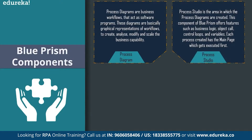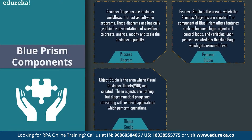Moving on to the next component — process studio. Process Studio is the area in which process diagrams are created. This component of Blue Prism offers various features such as business logic, object calls, control loops, variables, and so on. Each process created has a main page which executes first. When you create a process it has a number of pages based on how many you create, but initially it has a main page, and when you execute the process, the main page executes first.